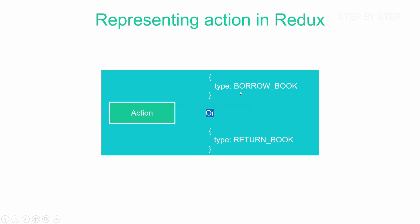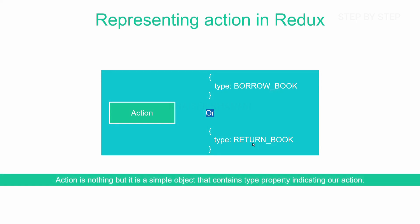For example, we have seen the library example — I want to borrow the book or I can return the book. These are the actions. Once this action is dispatched, using the reducer we are manipulating the data, and then that updated data will be sent to the store. This is how we represent action in Redux — inside an object with one type property indicating what action has to be performed.